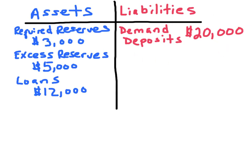So $20,000 you put into the bank. Now the bank has to keep part of that money on reserve — we call those required reserves. What is not required becomes excess reserves, and excess reserves can be lent out. So this bank currently has $3,000 in required reserves, lent out $12,000, and has $5,000 in excess reserves.